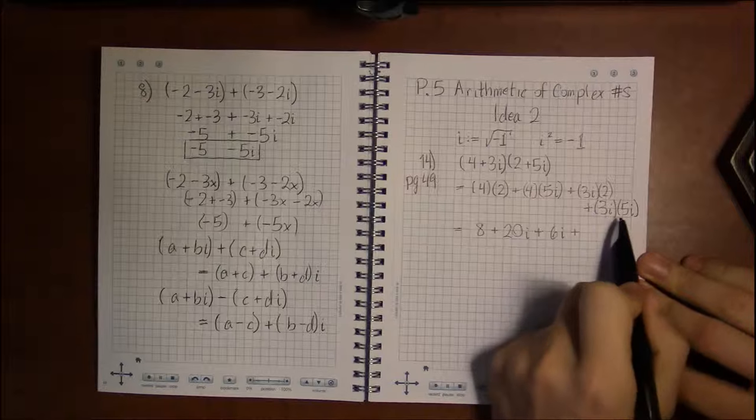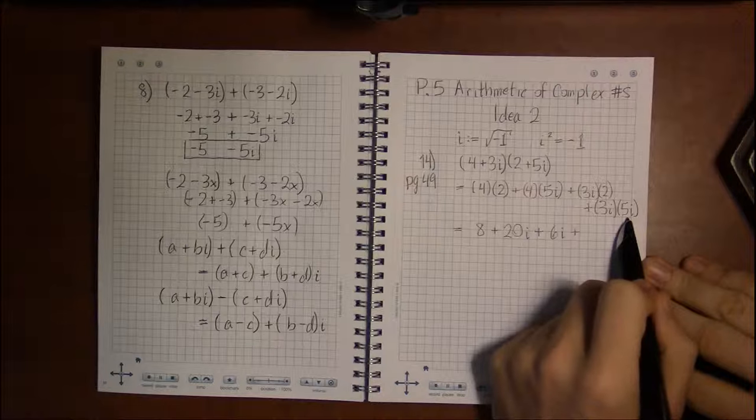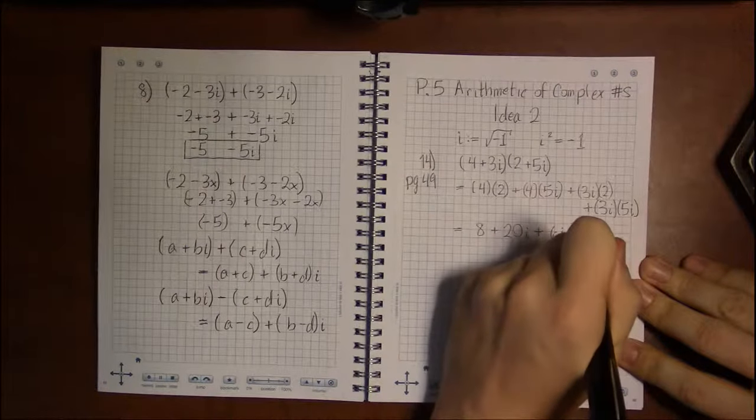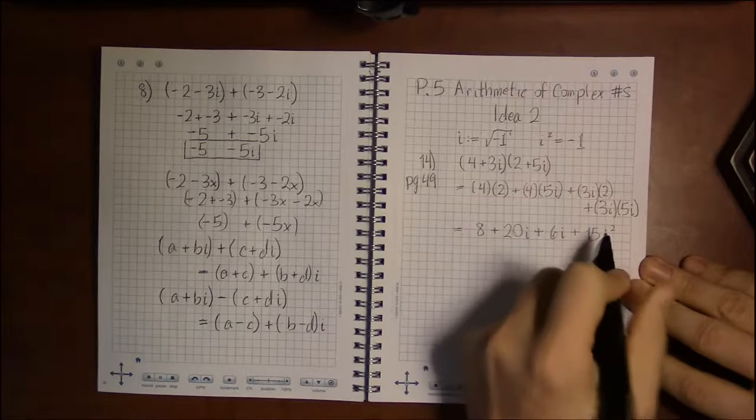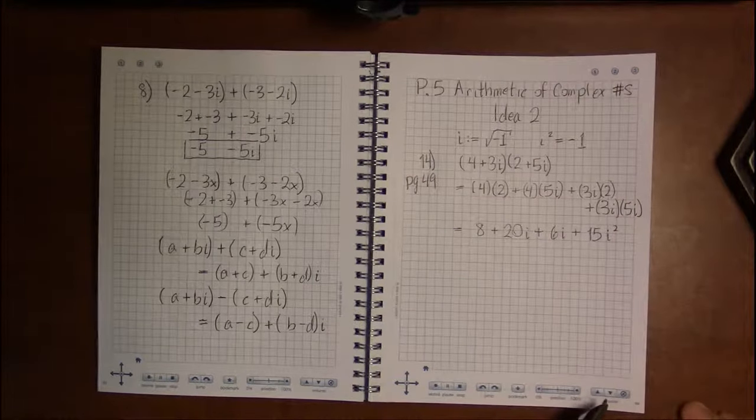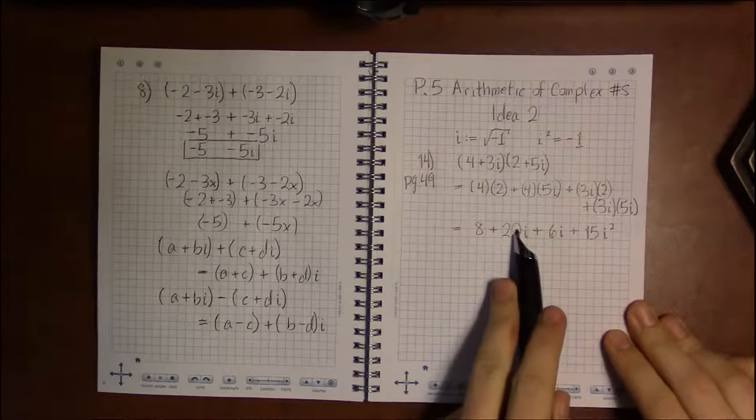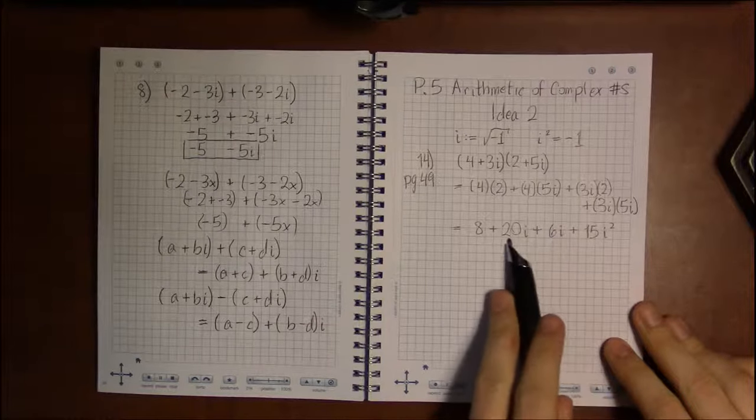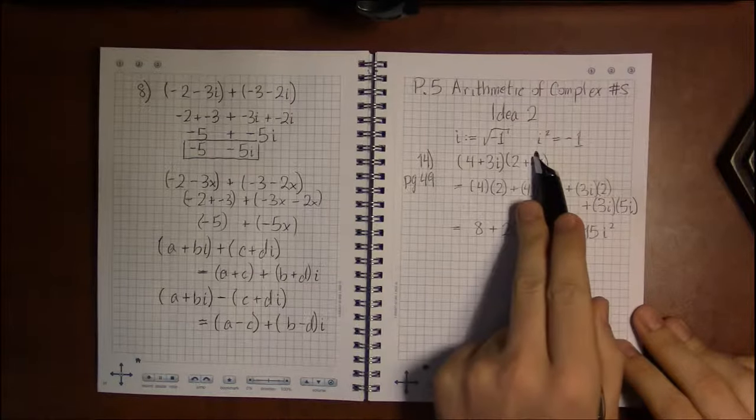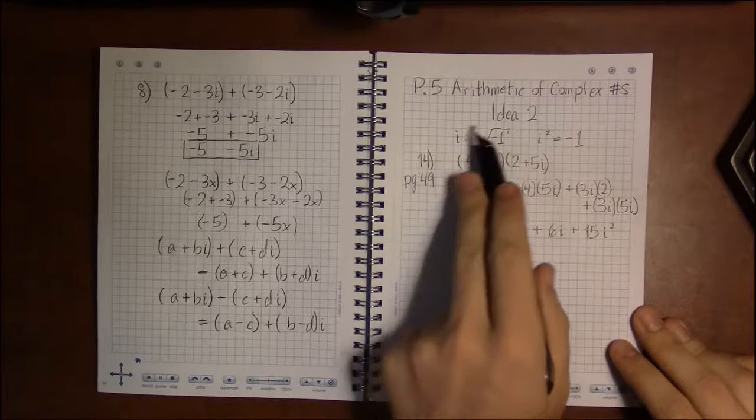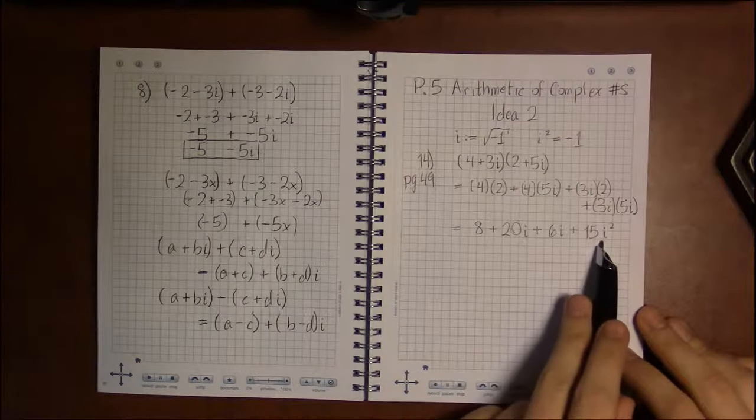Ah, 3i times 5i. Well, if this was 3x and 5x, that would be 15x squared. So this should be 15i squared. Now, if this were x, the only thing I could do is combine these two. Make this 8 plus 26x plus 15x squared. But according to how I've arranged i, it turns out that i squared is negative 1.